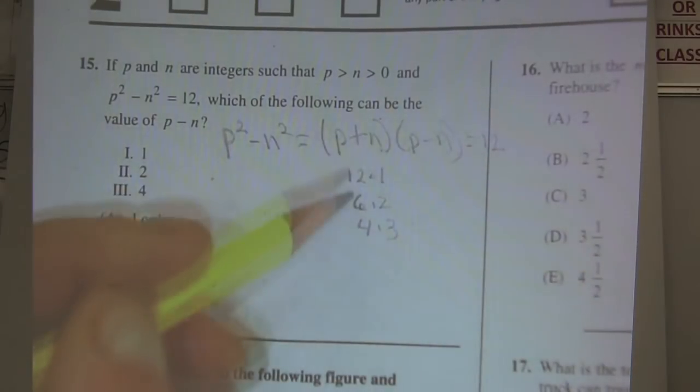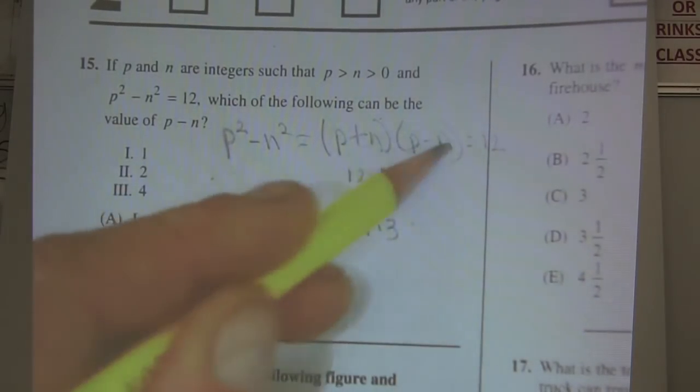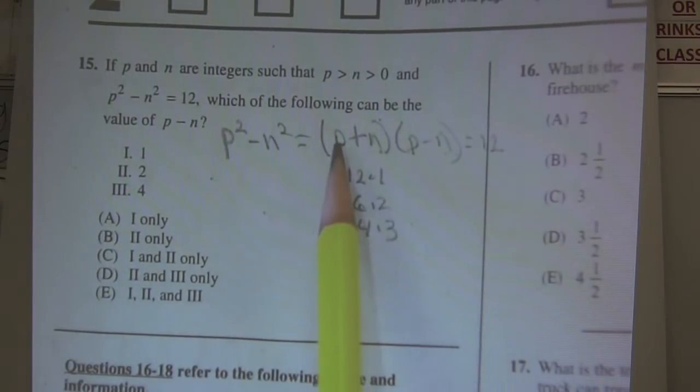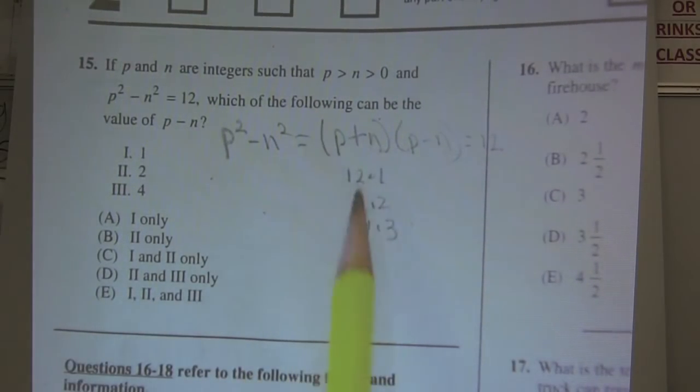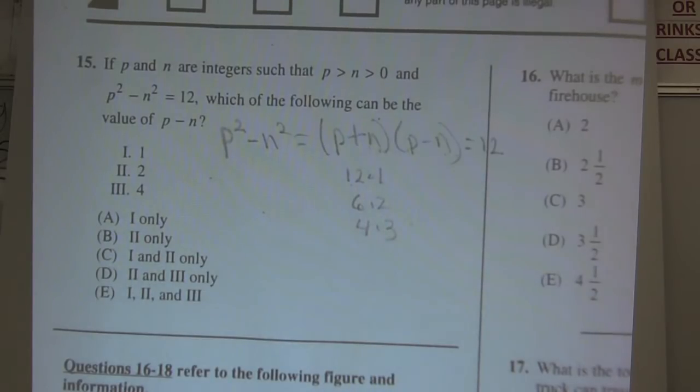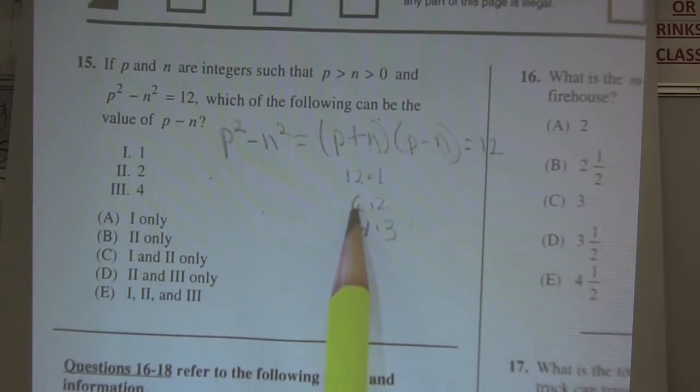Remember, these are the ones I'm going to add so they're going to be the bigger ones. These are the ones I'm subtracting, and they have to be the same numbers p and n. Are there any two numbers that I can add together that gets 12 and when I subtract the same two numbers gives me 1? I can't think of any. How about 6 and 2? Are there any two numbers I can add to get 6 and subtract to get 2? Yeah.